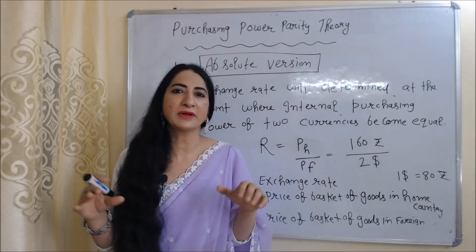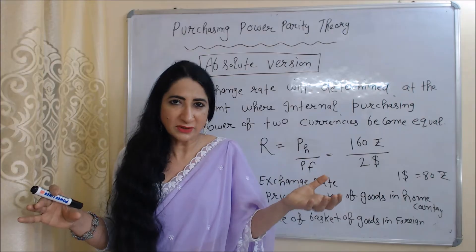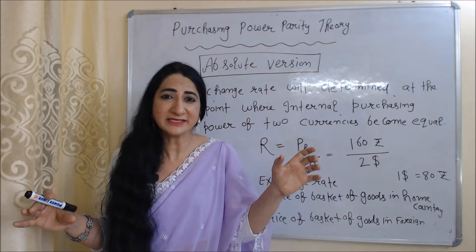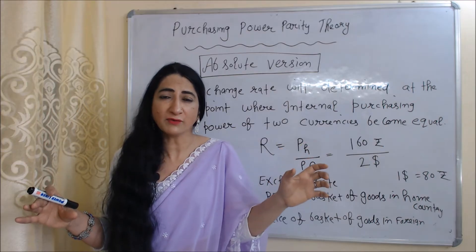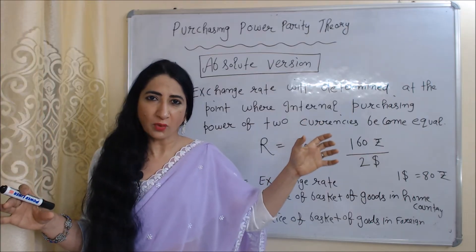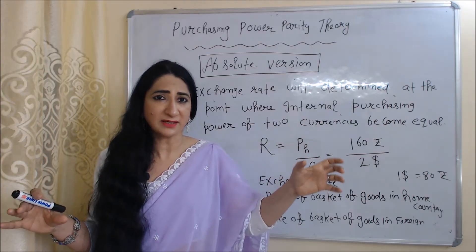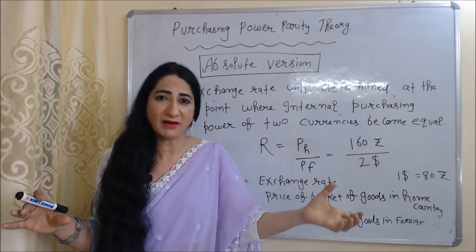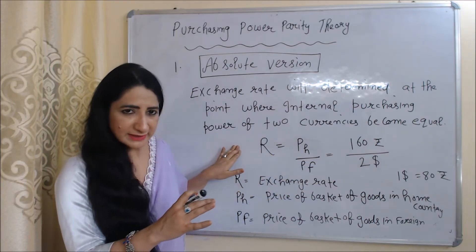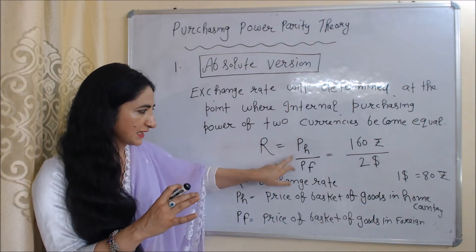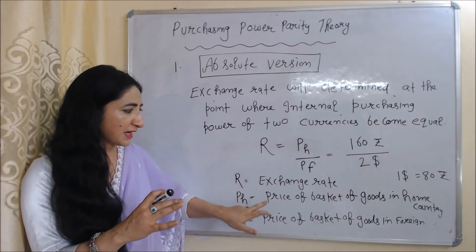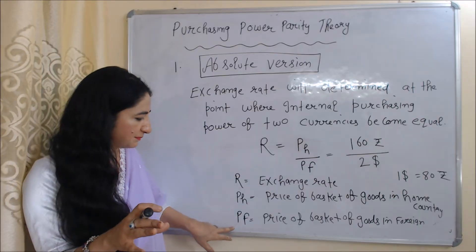First, we are going to talk about the absolute version. According to the absolute version, the exchange rate will be determined at the point where the internal purchasing power of the two currencies will become equal. The formula for calculating this is: R equals PH over PF, where R is the exchange rate, PH is the price of a basket of goods in the home country, and PF is the price of a basket of goods in the foreign country.